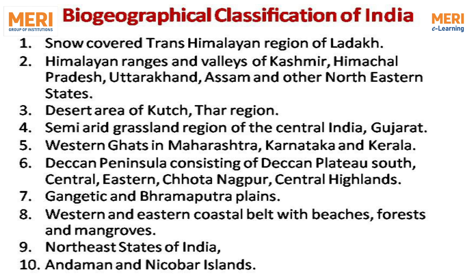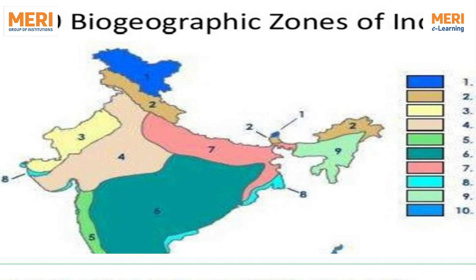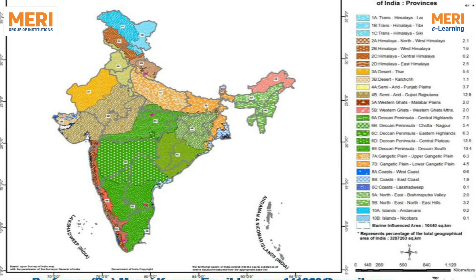The 10 biogeographical zones of India are: (1) Snow-covered trans-Himalayan region of Ladakh; (2) Himalayan ranges and valleys of Kashmir, Himachal Pradesh, Uttarakhand, Assam, and other northeastern states; (3) Desert areas of Kutch and the Thar region; (4) Semi-arid grassland region of Central Asia and Gujarat; (5) Western Ghats in Maharashtra, Karnataka, and Kerala; (6) Deccan Peninsula, consisting of the Deccan Plateau; (7) Central-Eastern Chhota Nagpur and Central Highlands; (8) Gangetic and Brahmaputra plains; (9) Western and Eastern Coastal belt with beaches, forests, and mangroves; (10) Andaman and Nicobar Islands. These 10 biogeographical zones have been shown in the figure.